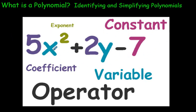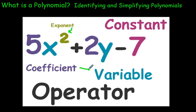The exponent here is 2. A constant is just a regular old number — in this case it's 7 in this polynomial. A variable is the letter you see, like y or x; more than one is called variables. A coefficient is a number that is in front of or together with a variable — when these two are together, the number in front is called a coefficient. So the 5 and the 2 are both coefficients here.